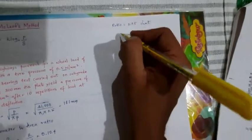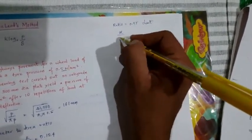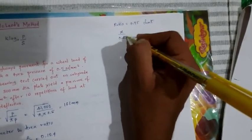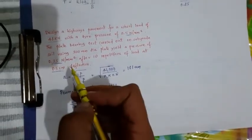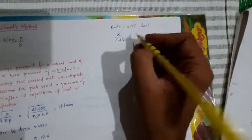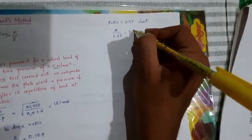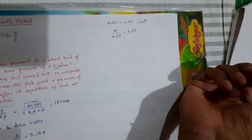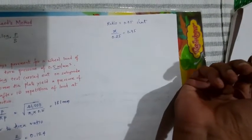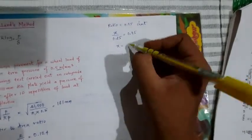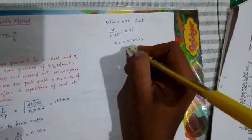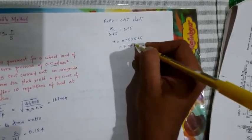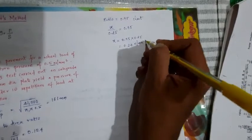Now for this ratio, x is nothing but for x divided by 0.25, 0.25 is nothing but the plate load pressure. So x is equal to x divided by 0.25, that is nothing but equal to whatever the ratio you got from the chart. From this you're going to get x is nothing but a pressure of 0.95 into 0.25, you're going to get 0.24 Newton per mm square.